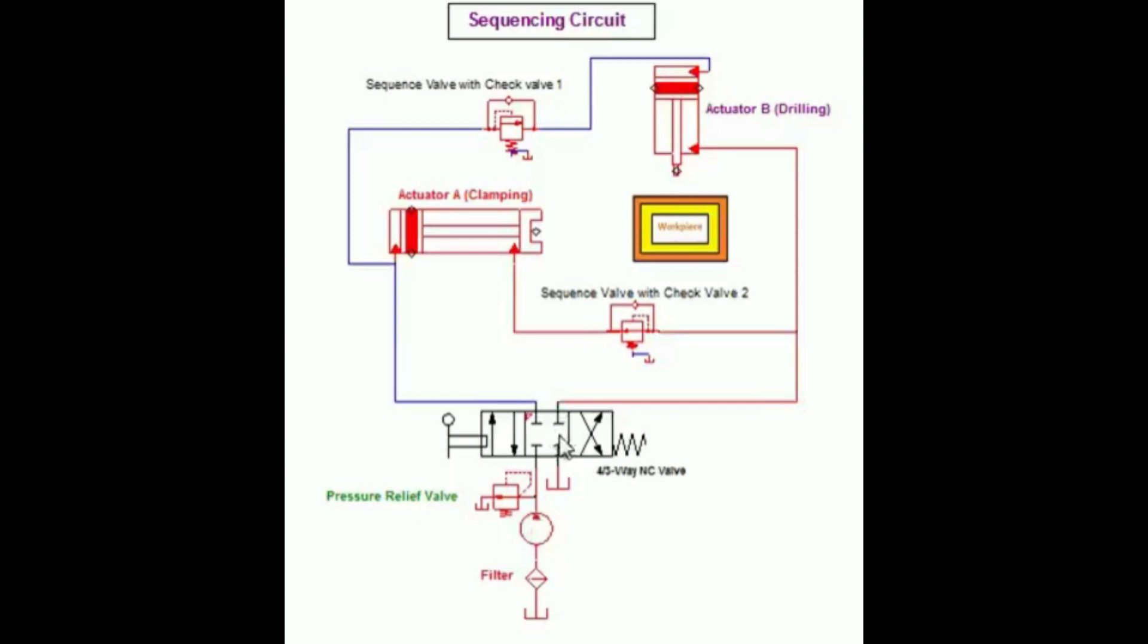The hydraulic circuit shown in the figure is an example of an application of sequencing valve in which a clamp cylinder extends first to hold a workpiece and then a second cylinder extends to drill the workpiece in the desired shape.